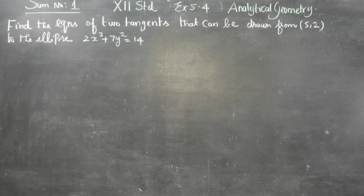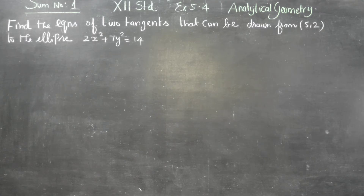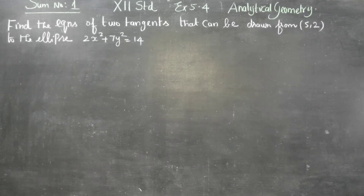Dear 12th standard students, in exercise number 5.4, analytical geometry, sum number 1: find the equations of 2 tangents that can be drawn from (5,2) to the ellipse 2x² plus 7y² is equal to 14.